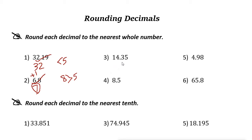Next example: the whole number — the ones place — is 4. The digit on the right side is 3, which is less than 5, so you can just remove them. So we rounded 14.35 to the whole number and the answer is 14.